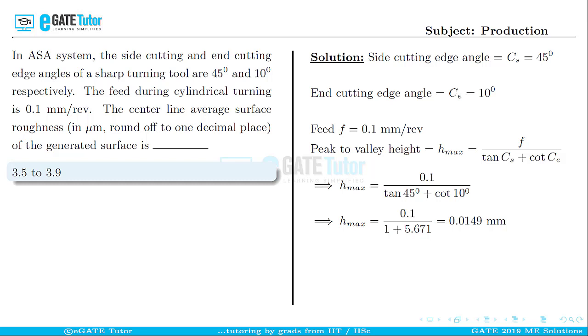Now since we have hmax (the maximum peak to valley height), we will calculate the centerline average surface roughness value, which is Ravg = hmax/4 = 0.0149 mm/4.